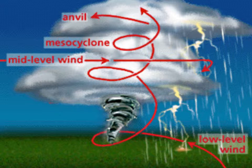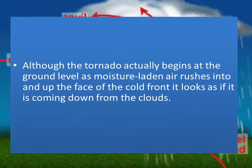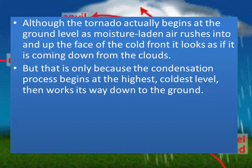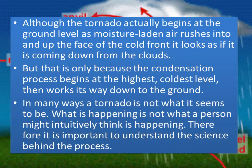Here we have the top of the cloud which is called the anvil. Then we have the mesocyclone which is the middle. Then you have the mid-level winds blowing around in a circle, and then your low-level wind coming across the face of the earth, hitting the cold front, building a trough, going up and over, and making clouds. Although the tornado actually begins at the ground level as moisture-laden air rushes into and up the face of the cold front, it looks as if it is coming down from the clouds. But that is only because the condensation process begins at the highest, coldest level, then works its way down to the ground. So the visibility begins at the top and works its way down to the ground, but actually the tornado begins at the ground level.